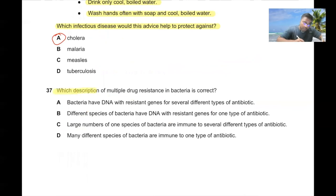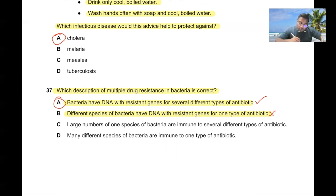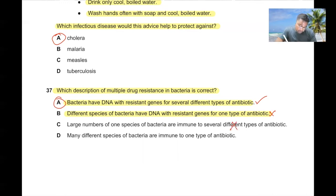Question number thirty-seven. Which description of multiple drug resistance in bacteria is correct? Bacteria have DNA with resistant genes for several different types of antibiotics — this is a correct statement, so A is the answer. The other options are wrong: different species with resistance to one antibiotic, one species immune to several antibiotics described incorrectly, or many species immune to one type — none of these explain multiple drug resistance properly.